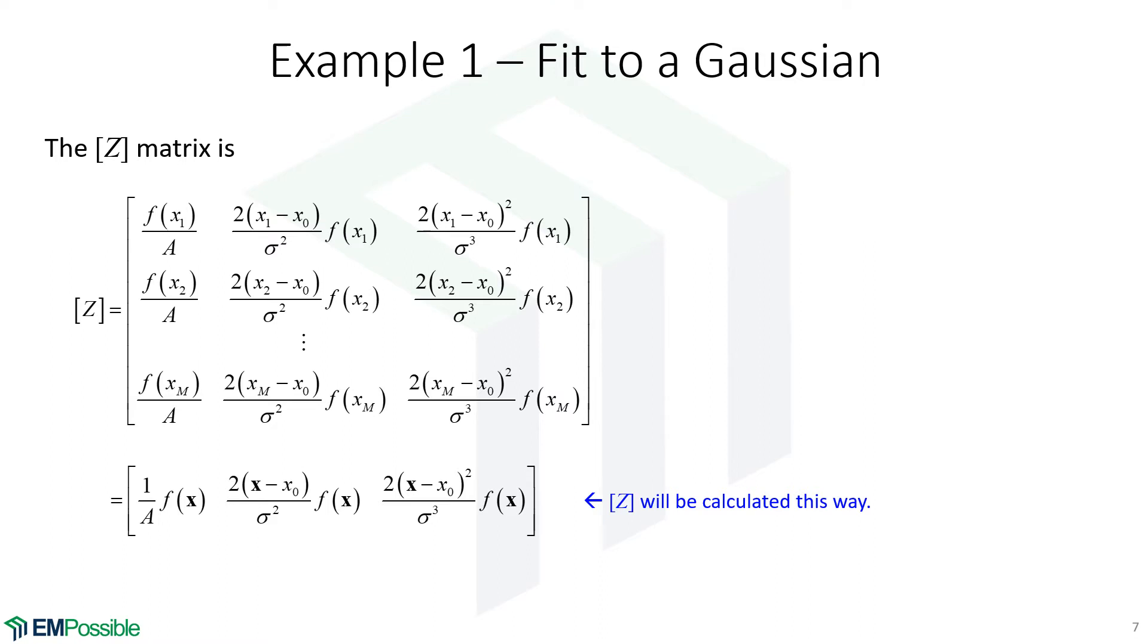Now, when we actually calculate this, we have three equations. Here's our partial derivative with respect to A, partial derivative with respect to X0, and partial derivative with respect to sigma. What we'll do is put all our measured values of X into a column vector or one-dimensional array, and calculate this entire column in the Z matrix at once. We'll calculate this other column of the Z matrix at the same time, and then this third column. That makes it a little bit more compact and easy to do.